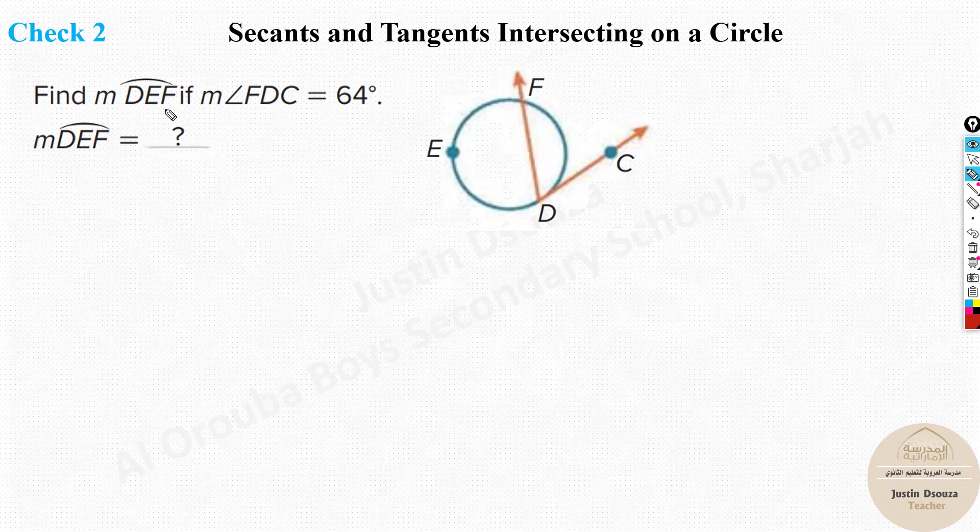Here they have told, find the measure of the arc D, E, F. So, this is interesting because the outside arc is told. But they have given you F, D, C is 64 degrees. Now, if this is 64, what is D, E, F? Now, we can't directly find D, E, F. We will find this in some time. But first, let's find arc F, D.